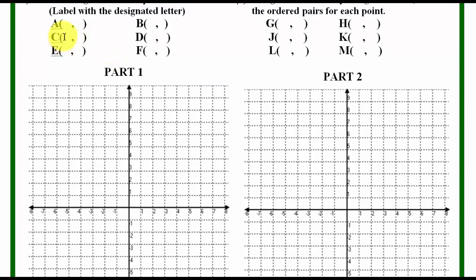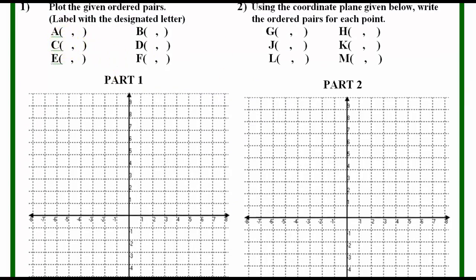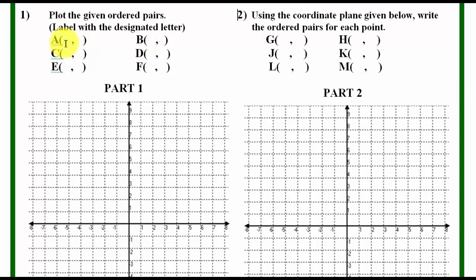Part 1: you are going to place the numbers for X and Y for A all the way to F. So you will put the numbers and what they will do is read the numbers and put the dots in the correct spot.